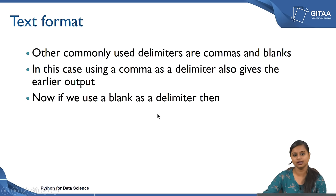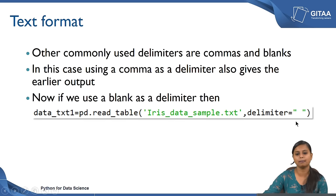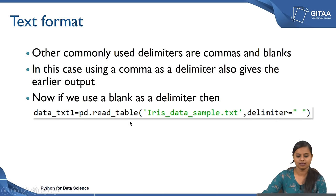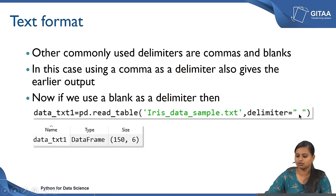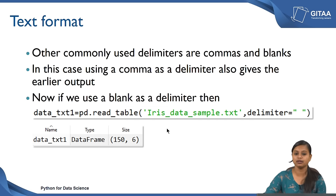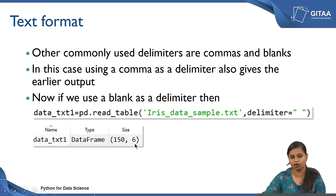If we use a blank as a delimiter, then I have used a blank space inside double quotes that represents a delimiter as blank. If I try to read this, the data will be read with 150 rows and 6 columns. The tab delimiter did not work here, the comma did not work here, but since I used the blank delimiter, the data has been read with 150 rows and 6 columns. You have to be sure about your data — how many rows and columns it is expected to have — so you can cross verify that whenever you read it.